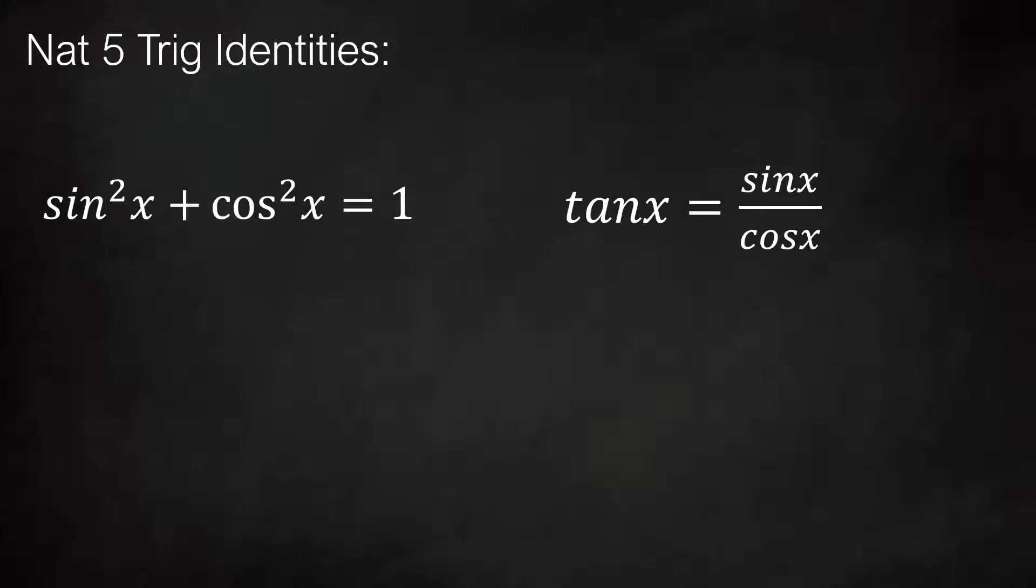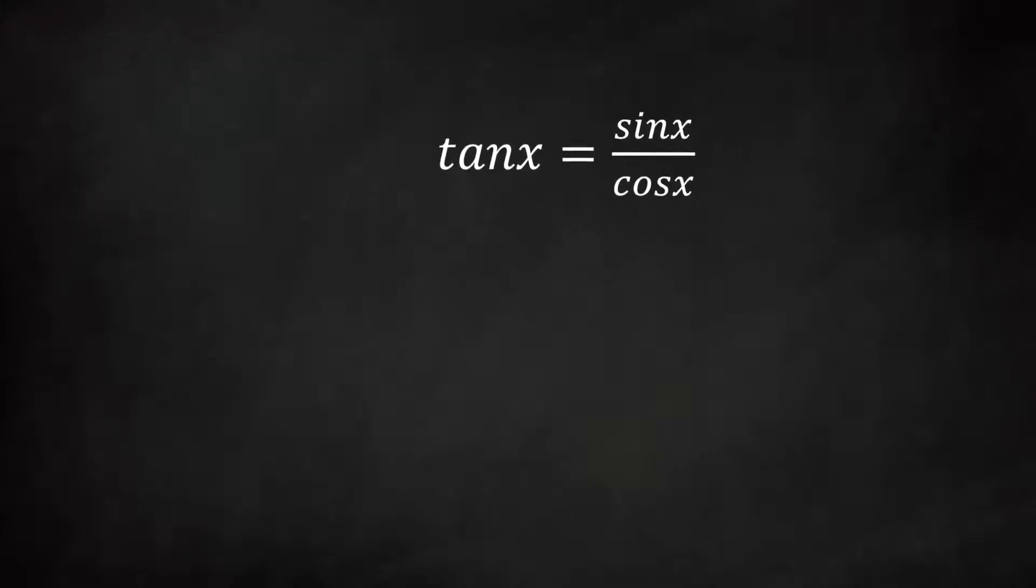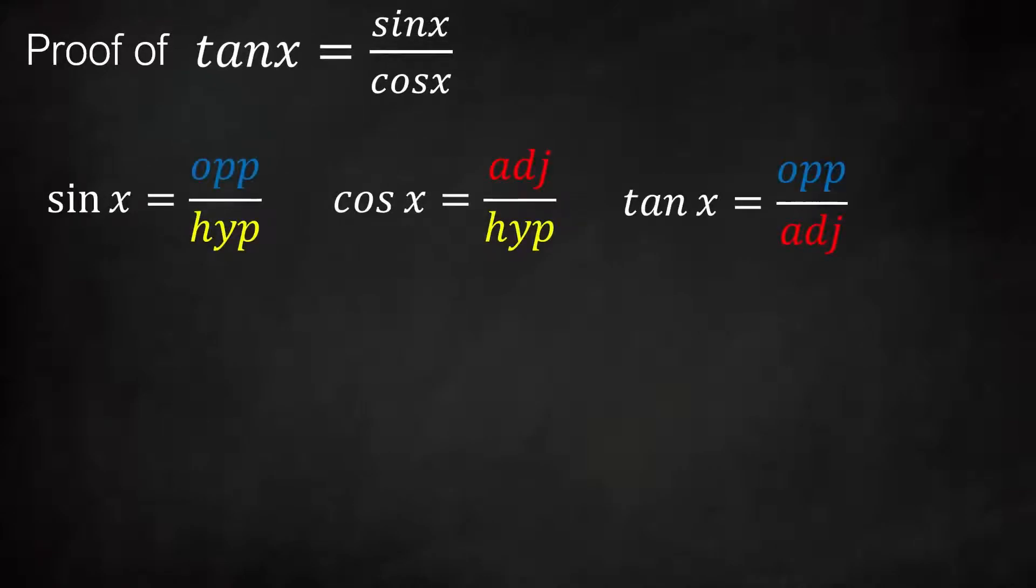Let's do a proof of tan x equals sine x over cos x. Recalling all three of the SOHCAHTOA relations, sine x over cos x is the opposite over hypotenuse, which is sine x, divided by cos x, which is adjacent over hypotenuse. We've just subbed in SOHCAHTOA values for sine and cos here.